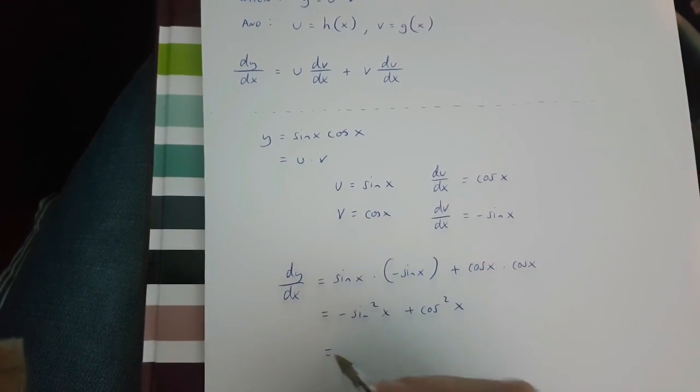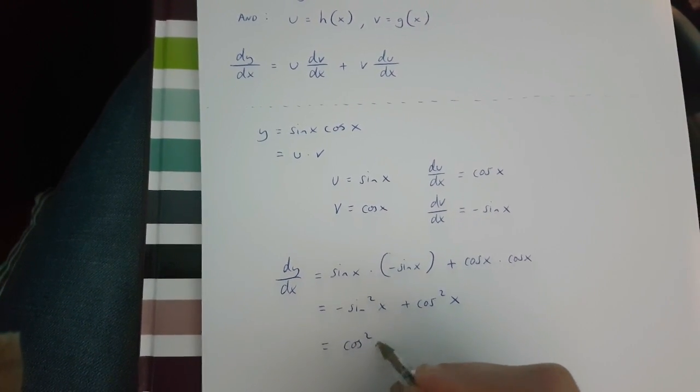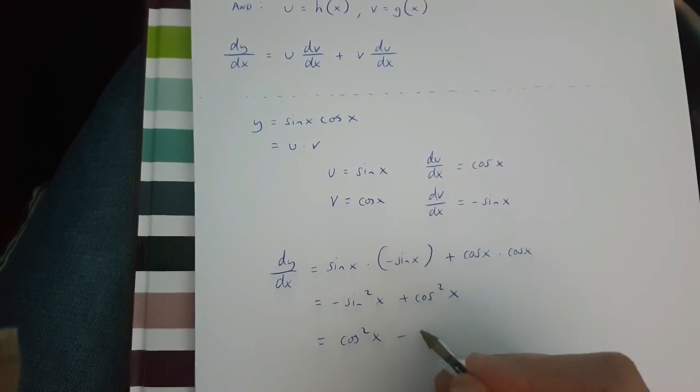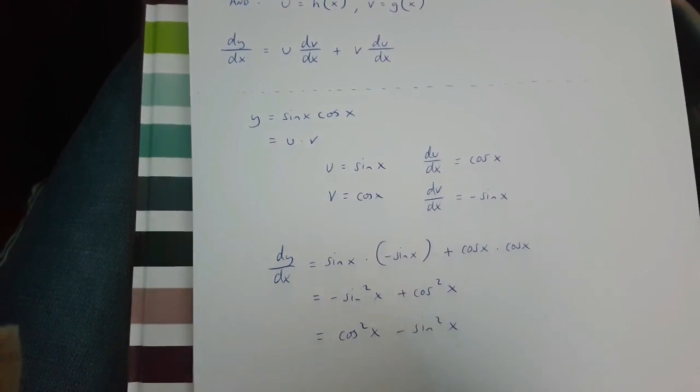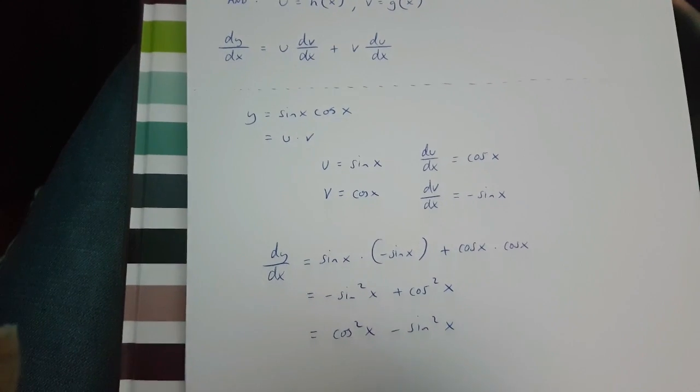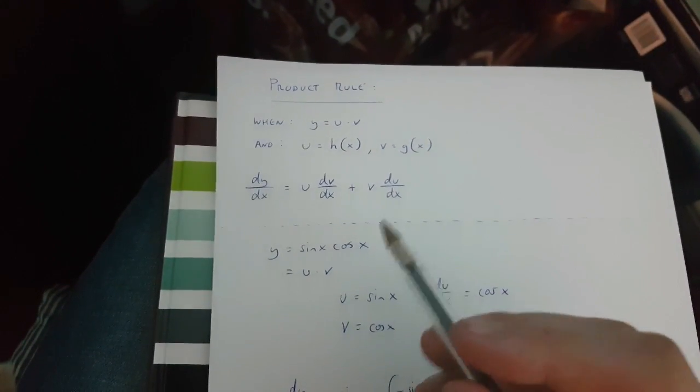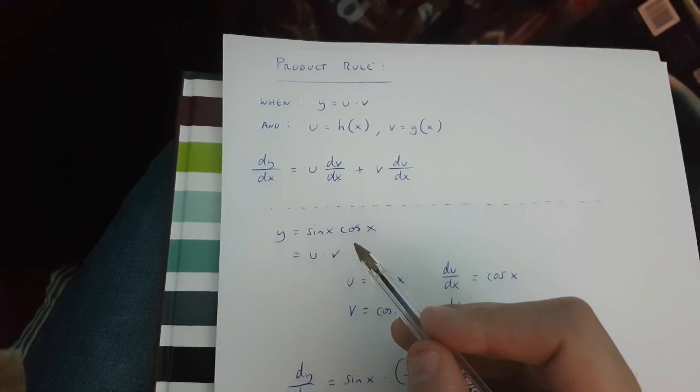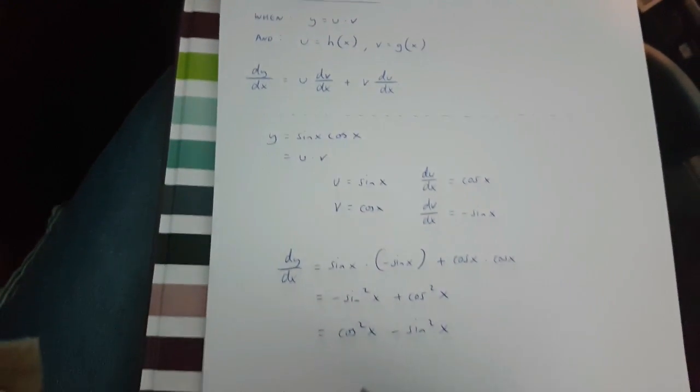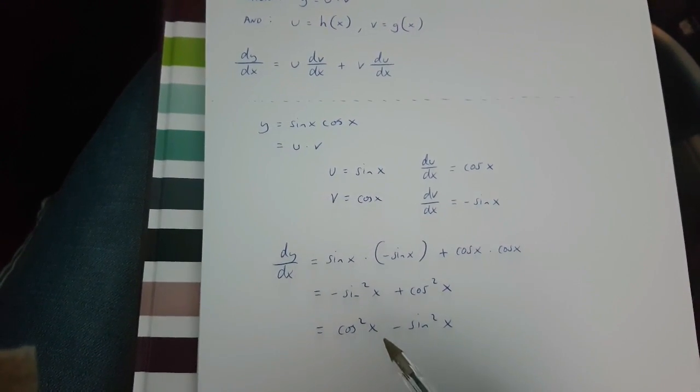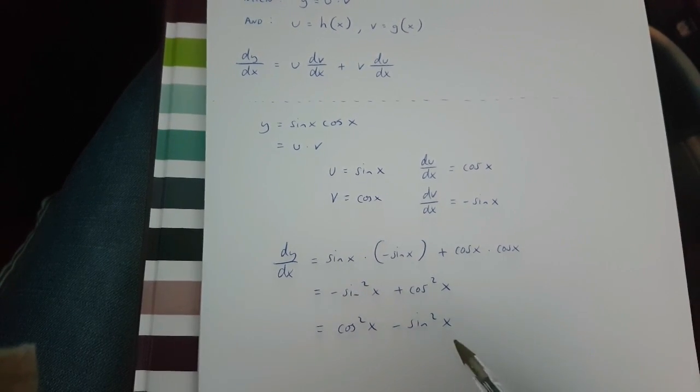And this can be changed into cos x squared minus sine x squared. So, the derivative of y equals sine x times cos x is, in fact, cos x squared minus sine x squared.